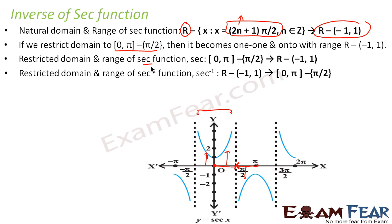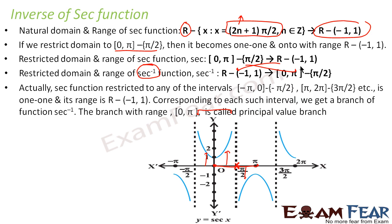If you just flip it to get sec inverse, the domain becomes any real number but not (-1, 1) and the range becomes [0, π] but not π/2. Here, [0, π] is the principal value branch.